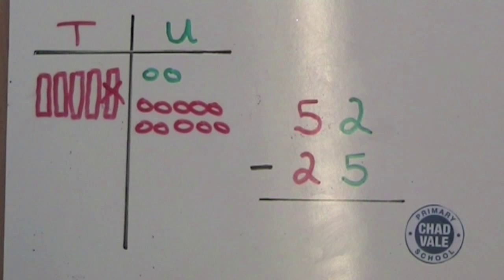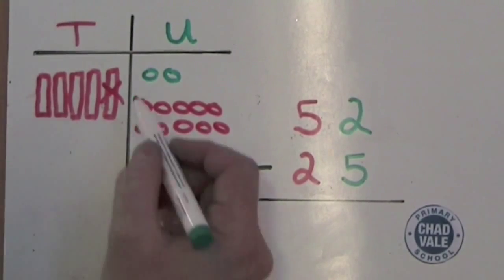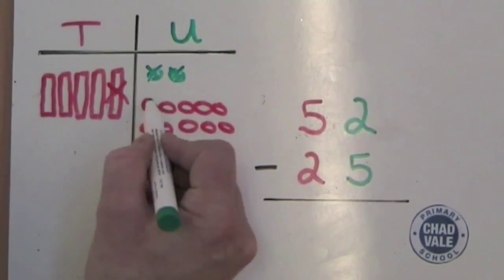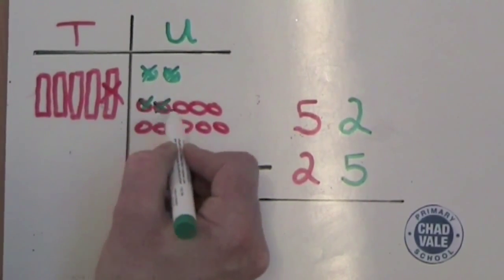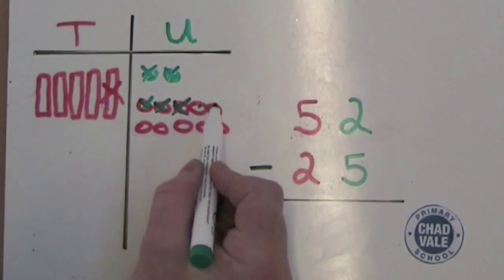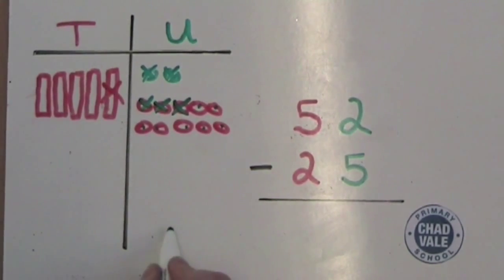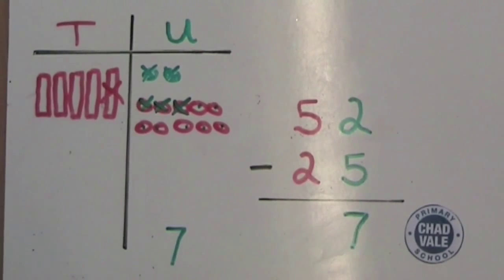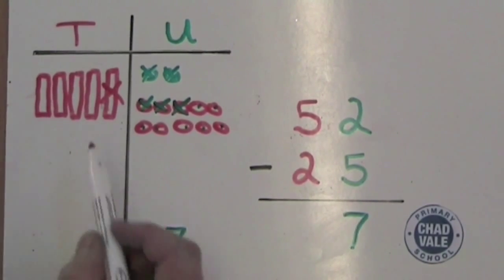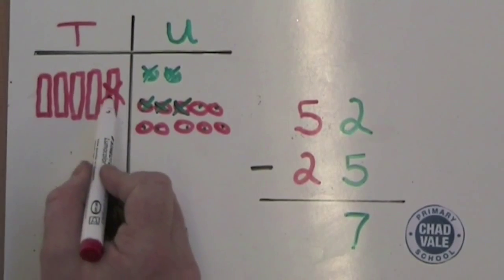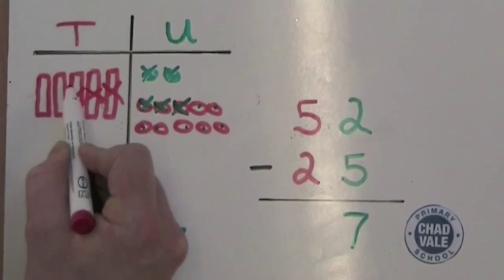Now we can subtract five units and we cross them off as we do so: one, two, three, four, five. We count how many are left and write these in the units column. We now need to take away two tens: one, two.